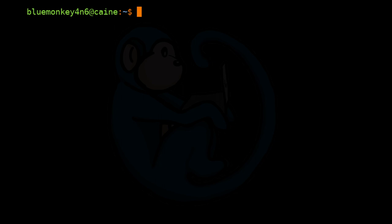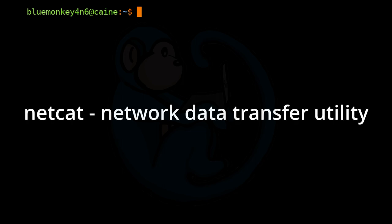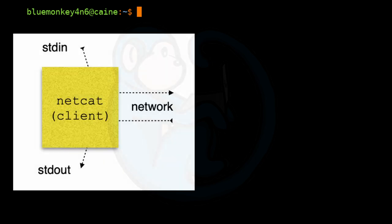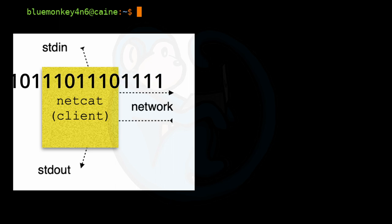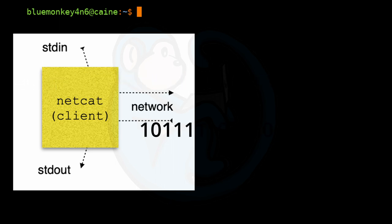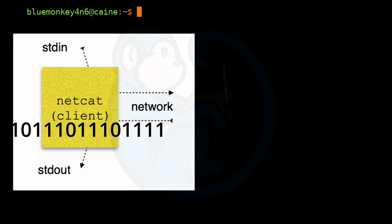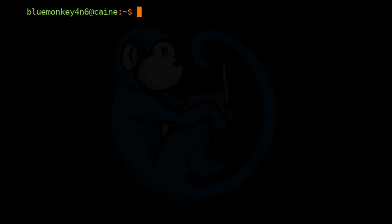A tool that allows one to easily move data across networks is netcat. It functions much like the cat command, except the data can be sent over TCP or UDP ports instead of through files. The client side initiates the connection, where input from standard input goes across the network to the listener. The data received back from the listener is sent to standard output, and errors from netcat will be sent to standard error.